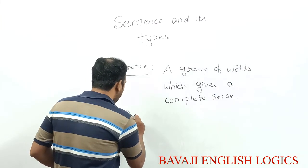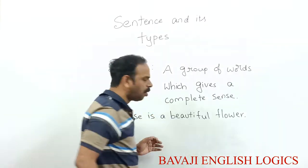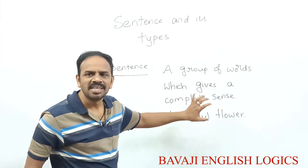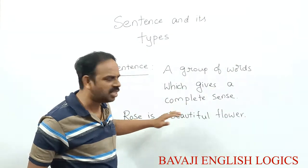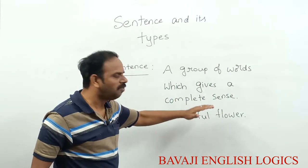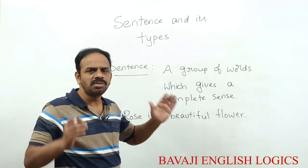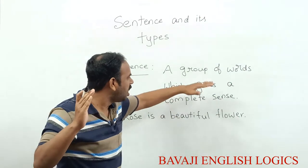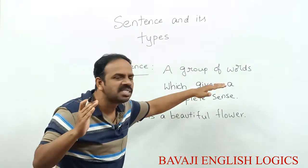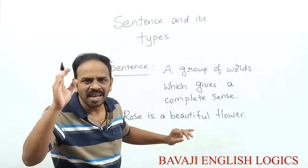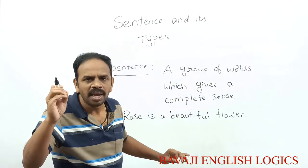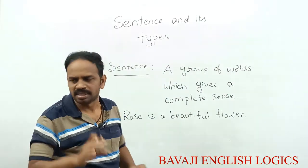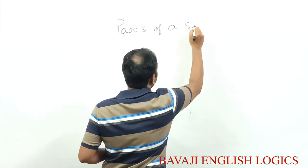For example, 'Rose is a beautiful flower.' This is what we call as a sentence — a group of words which gives a complete sense. Sense means meaning. Without meaning, we cannot call anything to be a sentence.